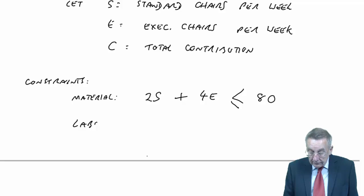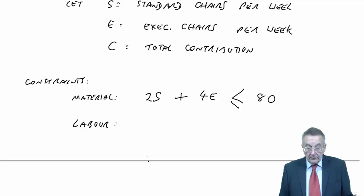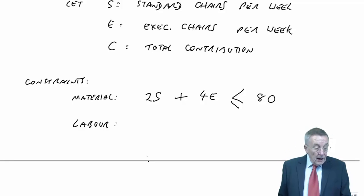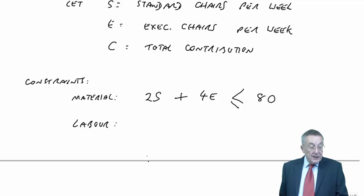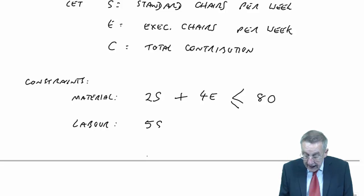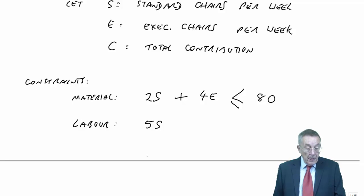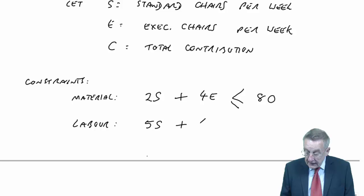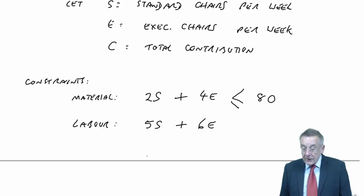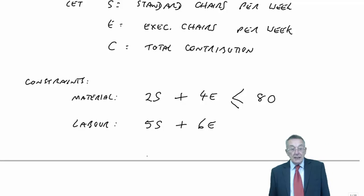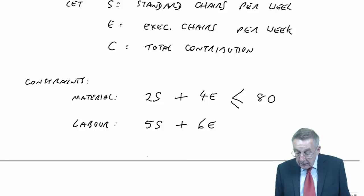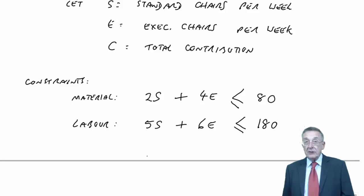In a similar way, labour. Each standard chair takes five hours, so we'll need five S hours. Each executive takes six hours, E executives, so six E. That's how much labour we'll need. But however much we end up using, it must be less than or equal to the total available of 180. So: 5S + 6E ≤ 180.